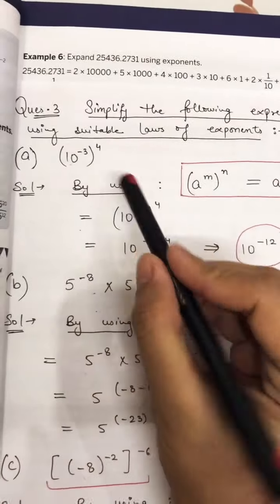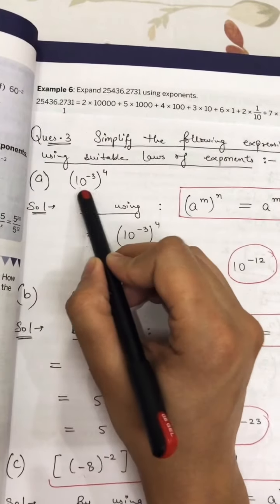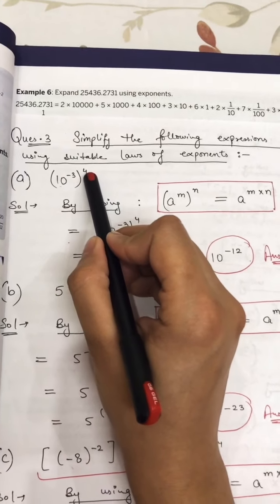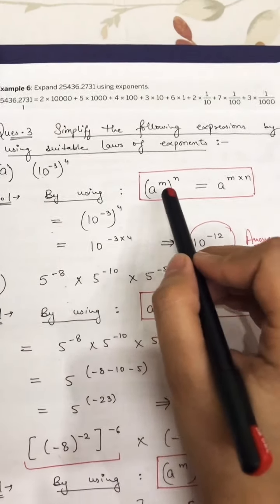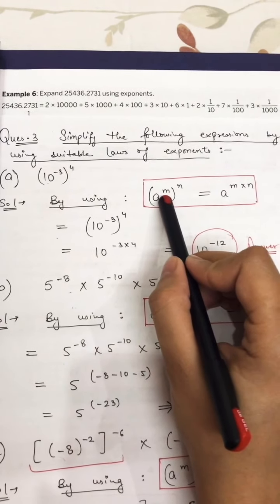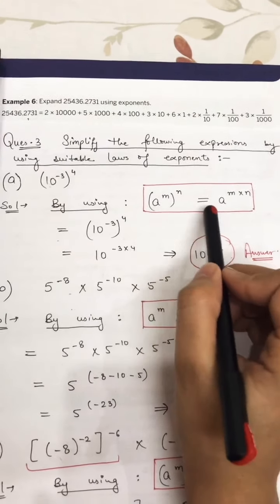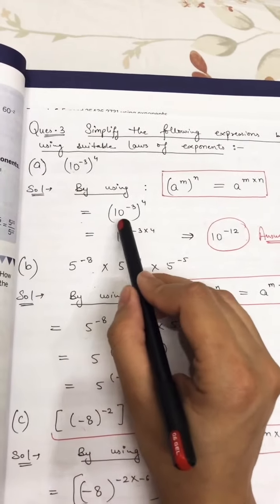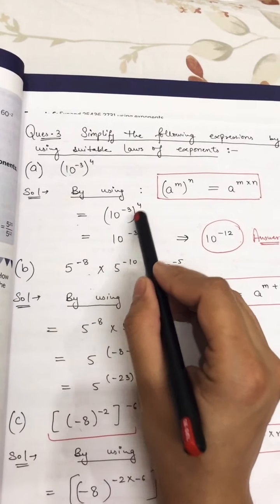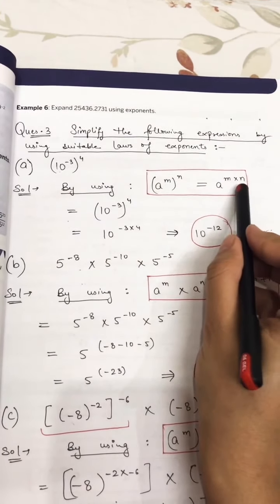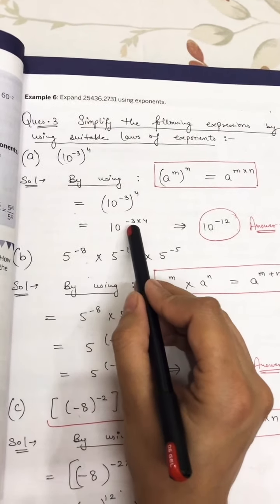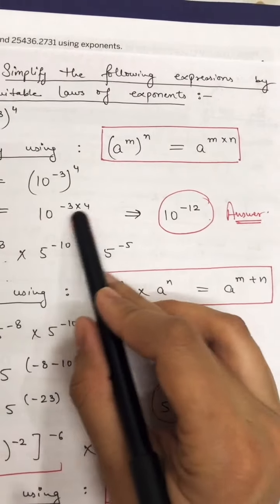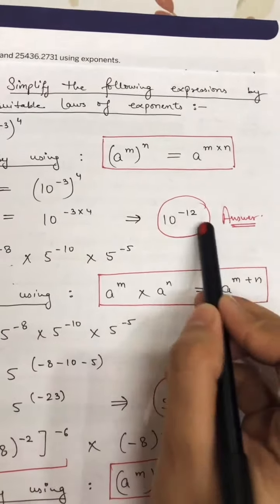For part A, we are using the law: a raised to power m raised to power n is equal to a raised to power m multiplied by n. Here a value is raised to a power and then raised to another power, so this power and this power will go in multiplication. So 10 raised to power minus 3 multiplied by 4 gives 10 raised to power minus 12. Three fours are 12 and the minus sign remains. That is your answer.